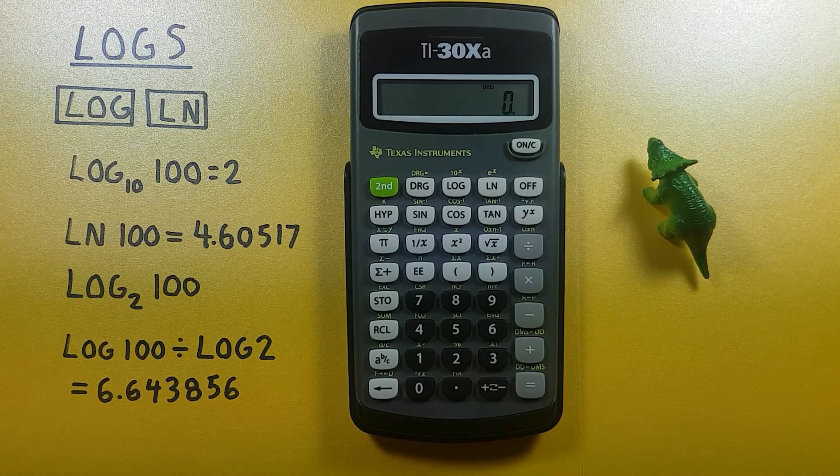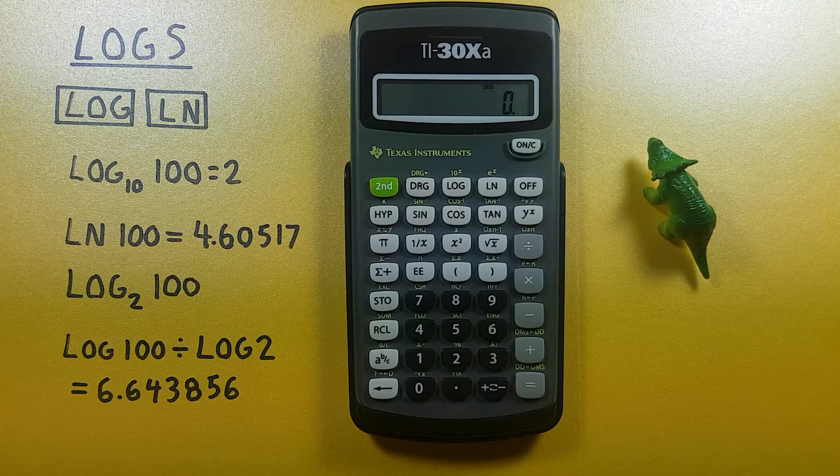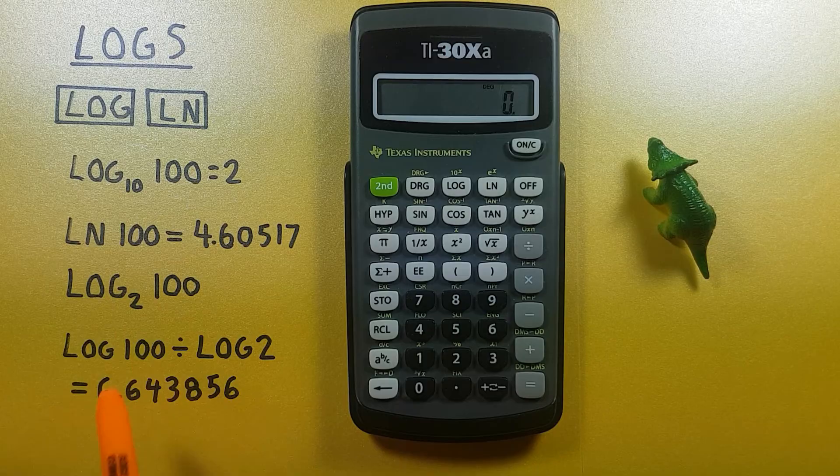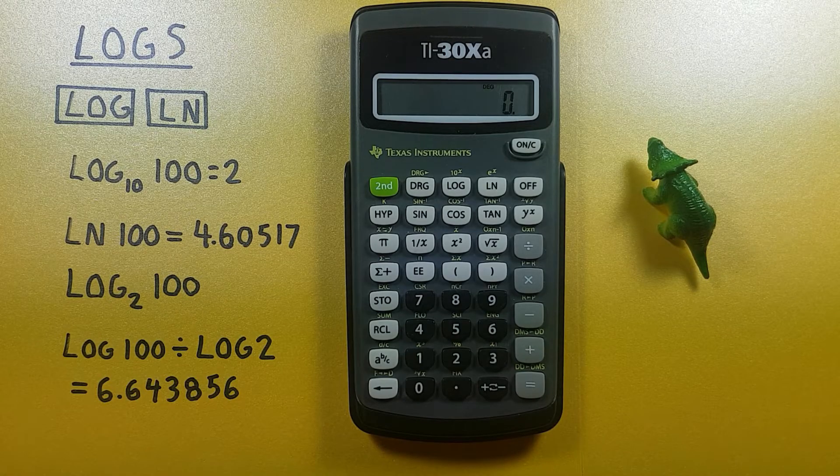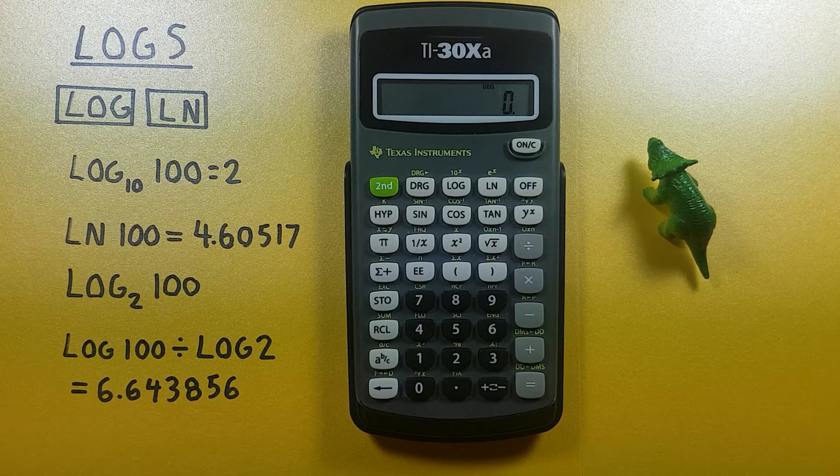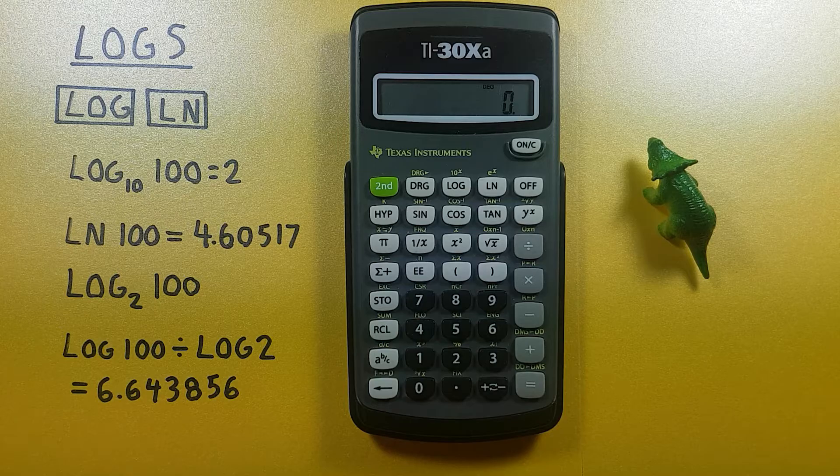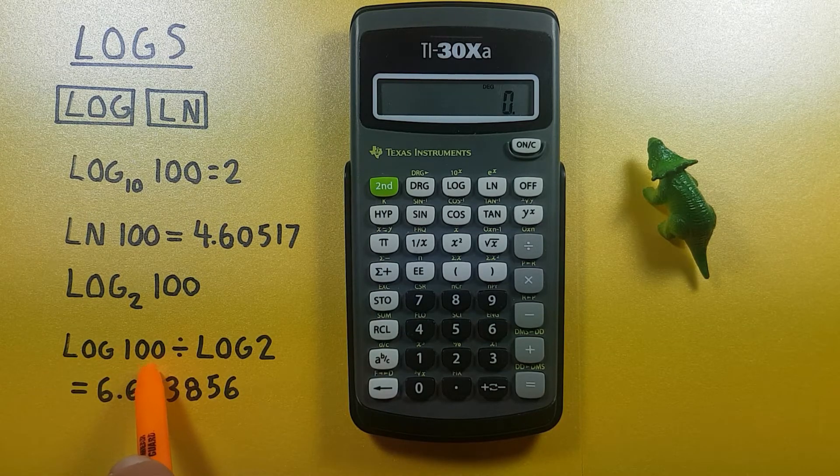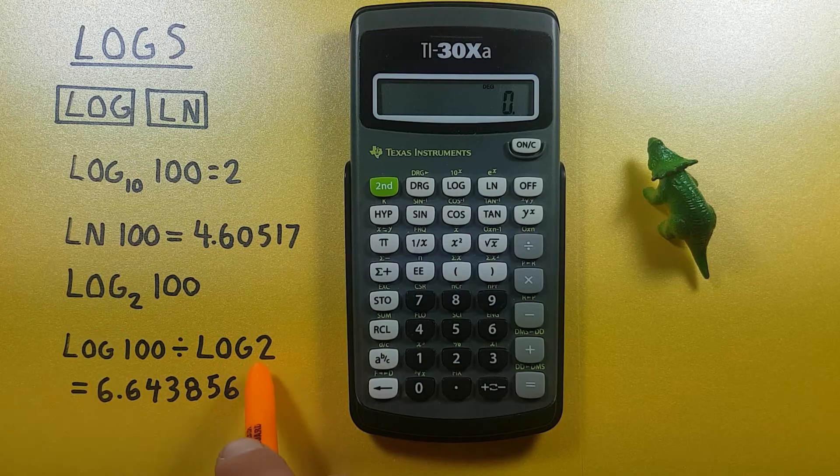But what if we wanted to find the log of a number that wasn't base 10, say log base 2 of 100? Well, to do this we can use something called the change of base formula, where we divide the log of the number that we're trying to find by the log of the base that we're trying to use.